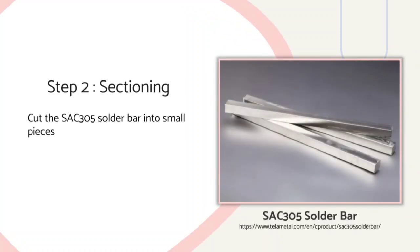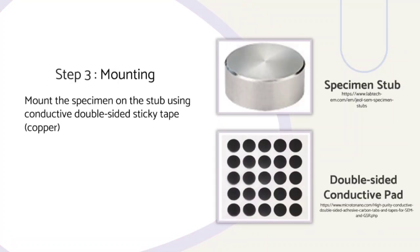Step 2: Sectioning. Cut the SAC-305 solder bar into small pieces. Step 3: Mounting. Mount the specimen on the stub using conductive double-sided sticky tape.